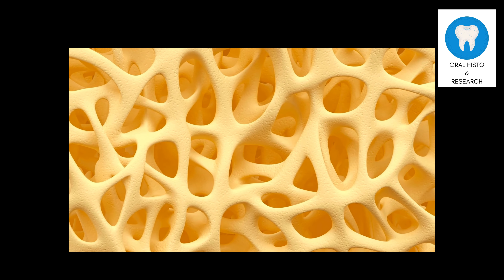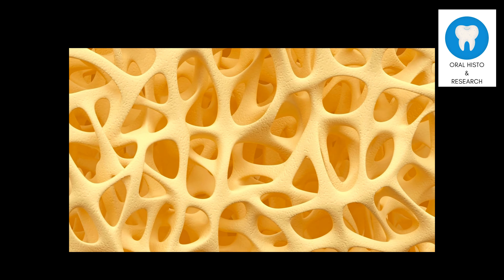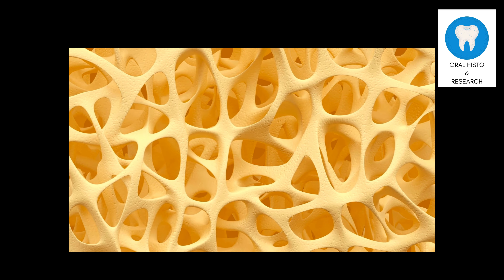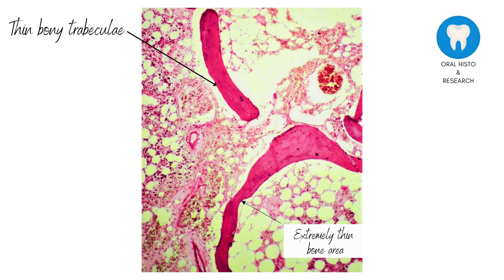Osteoporosis is marked by decreased bone density and deterioration of bone microarchitecture, resulting in porous and fragile bones. Histologically, extremely thin bony trabeculae are seen, prone to fractures.